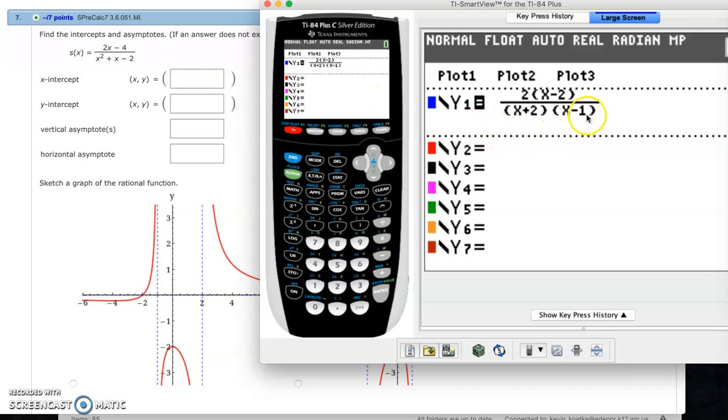Vertical asymptote from the factored version, there's two of them: negative 2 and 1. Remember that's the numbers that cause you to get a division by 0 or domain issue. And then EBA would be y equals 0 because the degree in the top is smaller than the degree in the bottom.